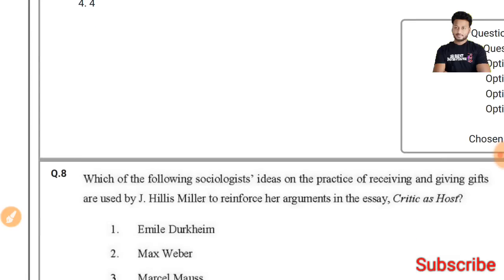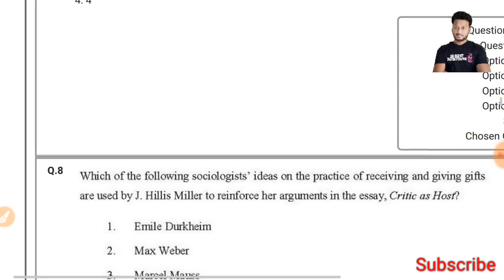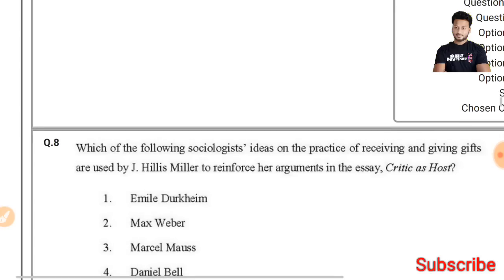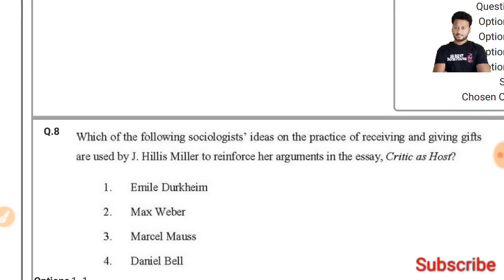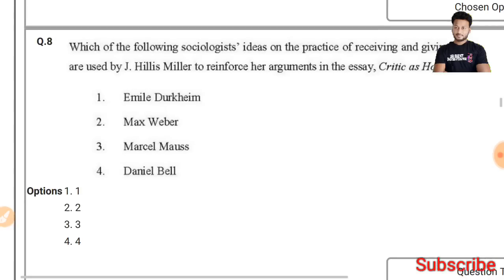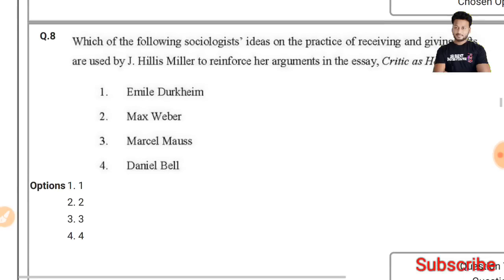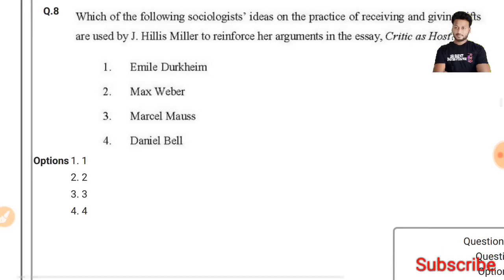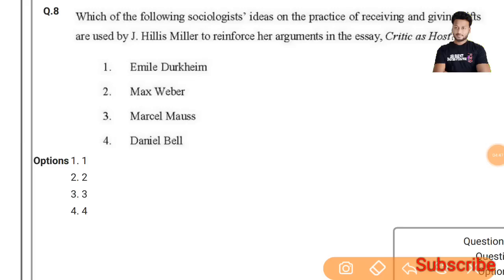Question 8: Which sociologist's ideas on the practice of receiving and giving gifts are used by J.H. Miller to repose the argument in 'The Critic as Host'? The right answer is Marcel Mauss — the third option is the right answer.